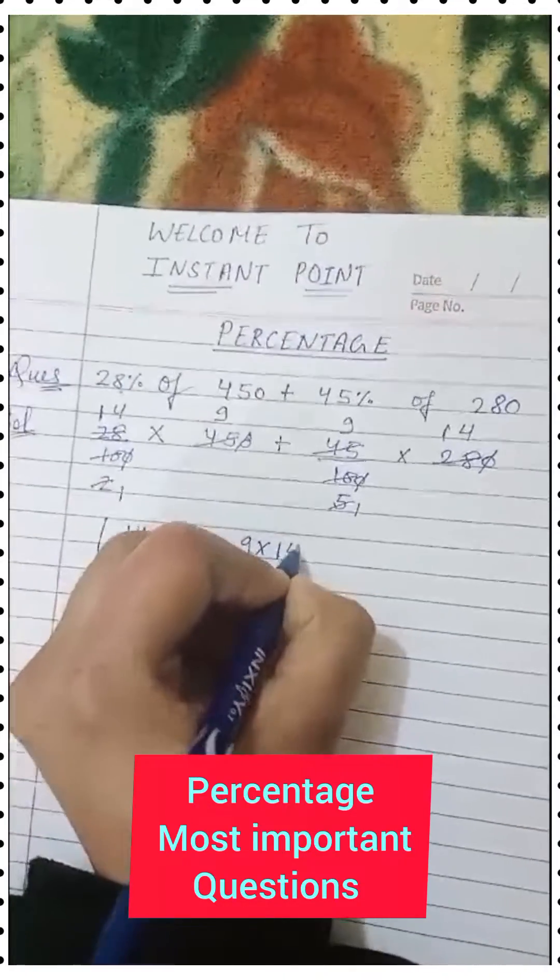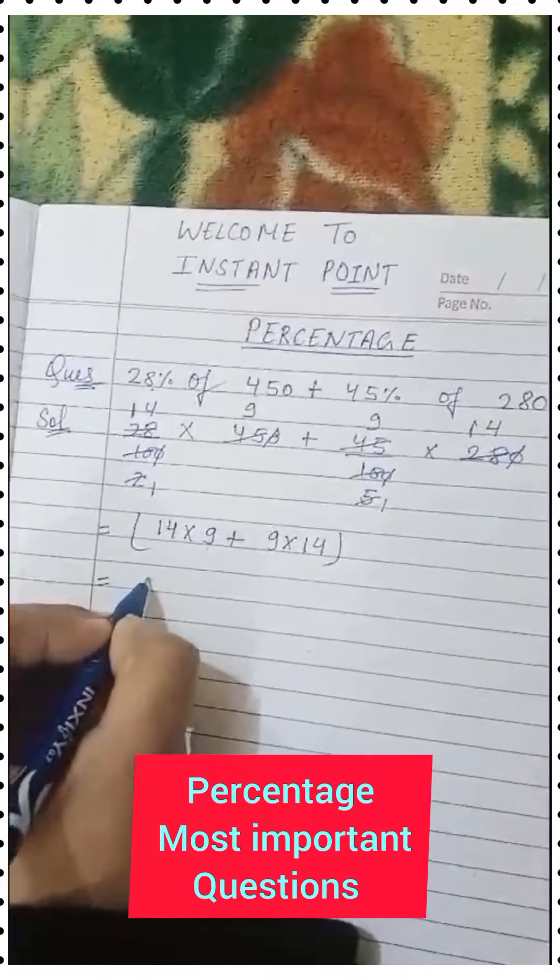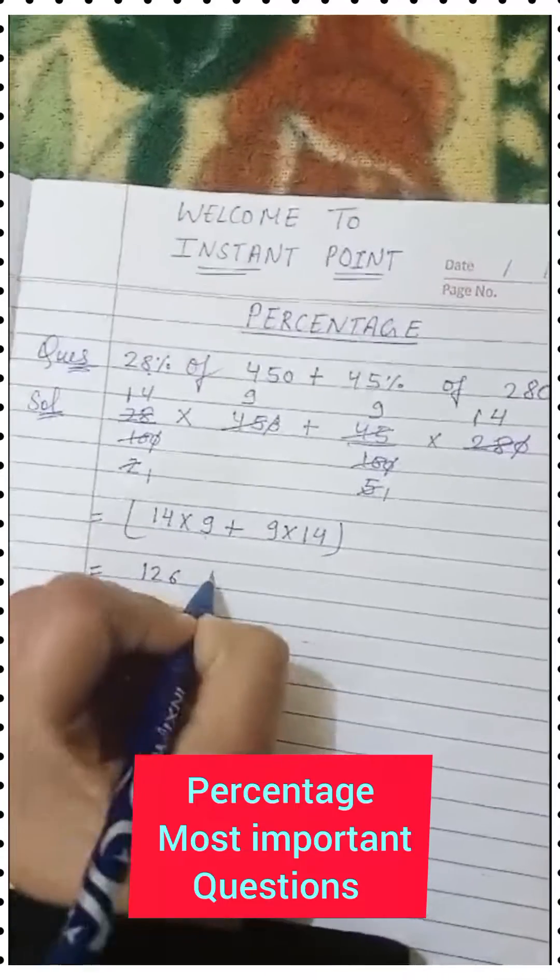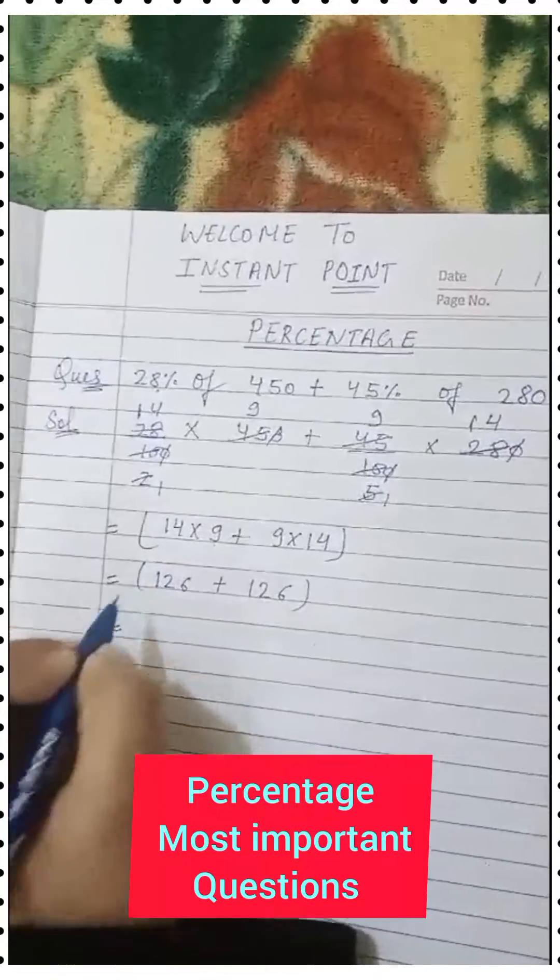When we multiply 14×9, we get 126. The same here also, 126.